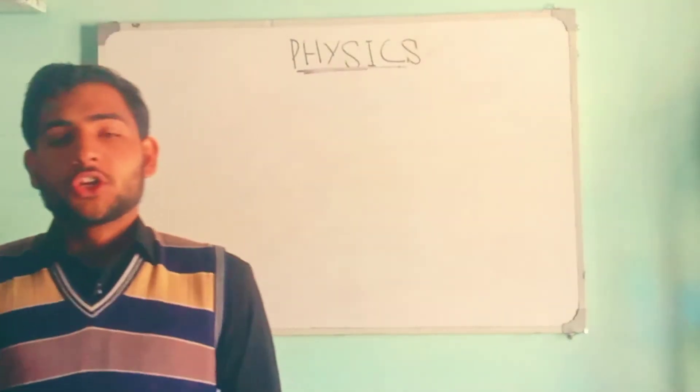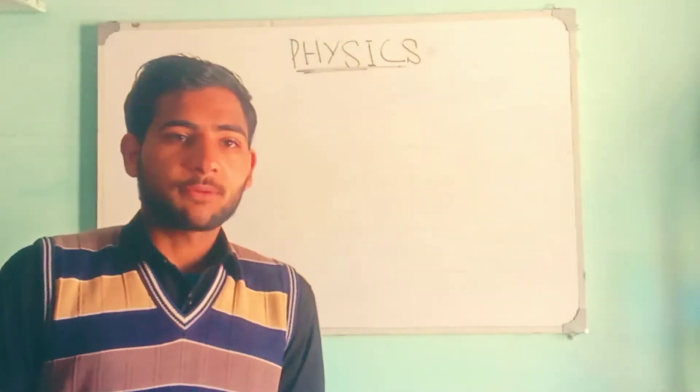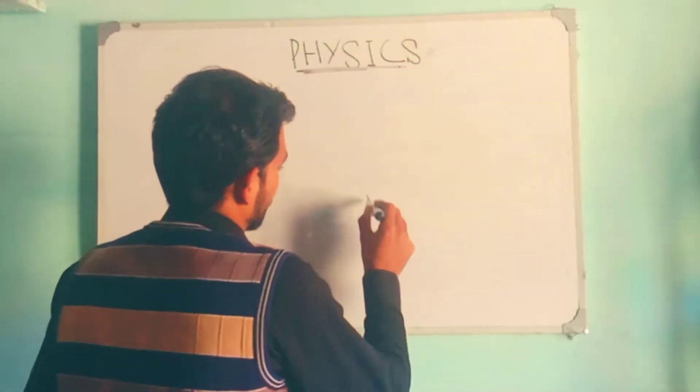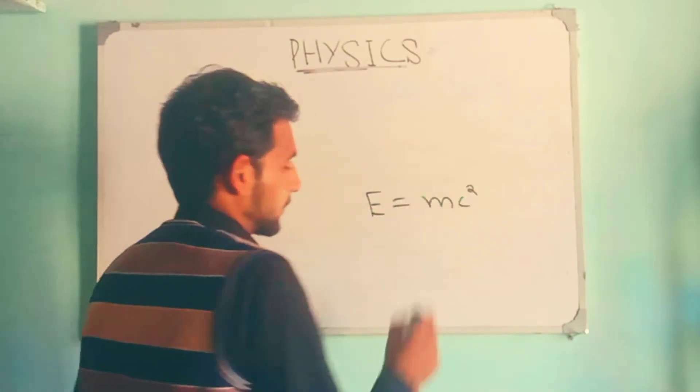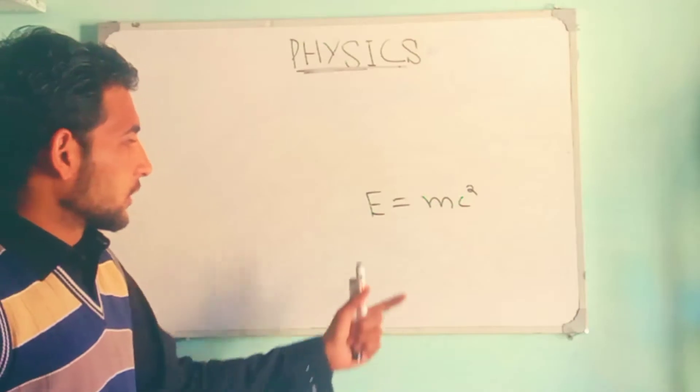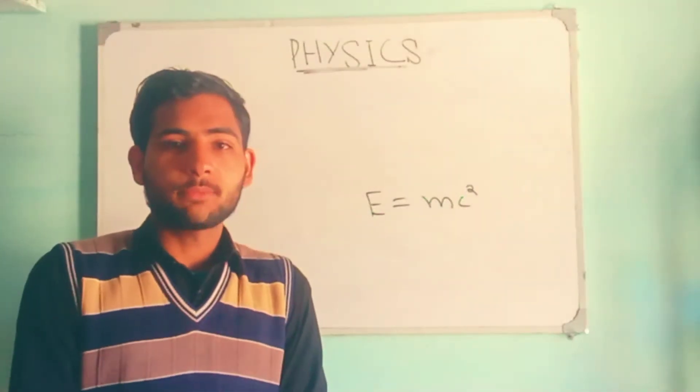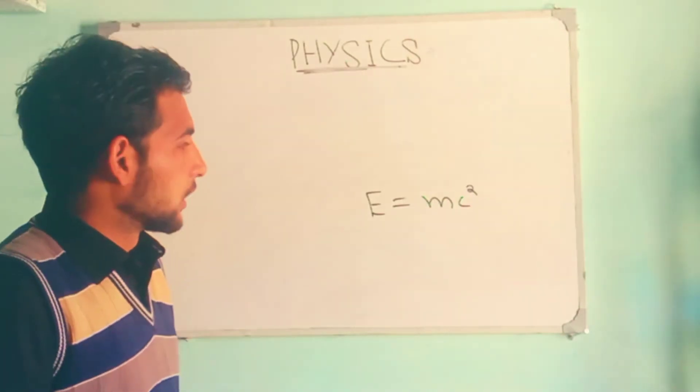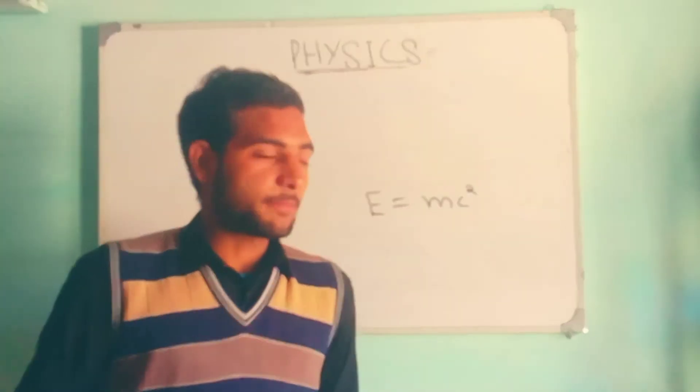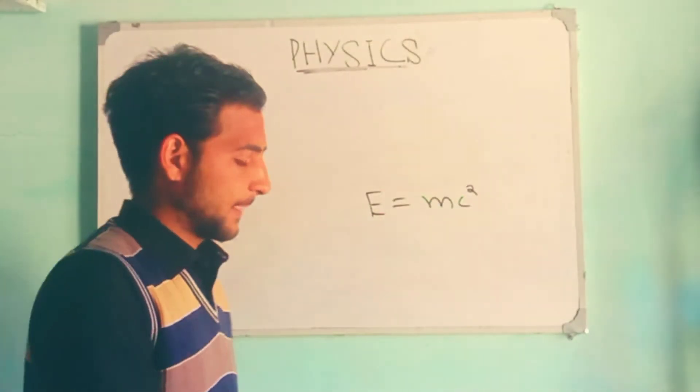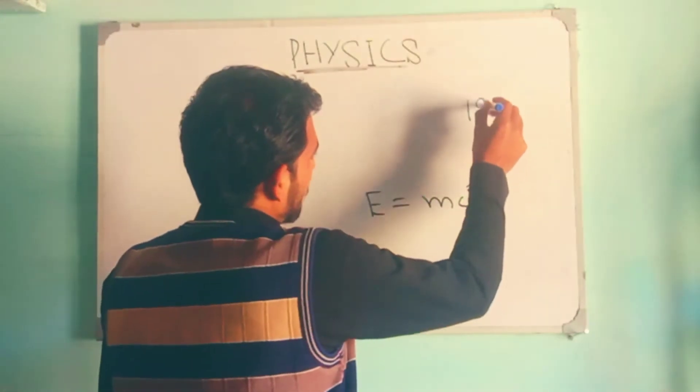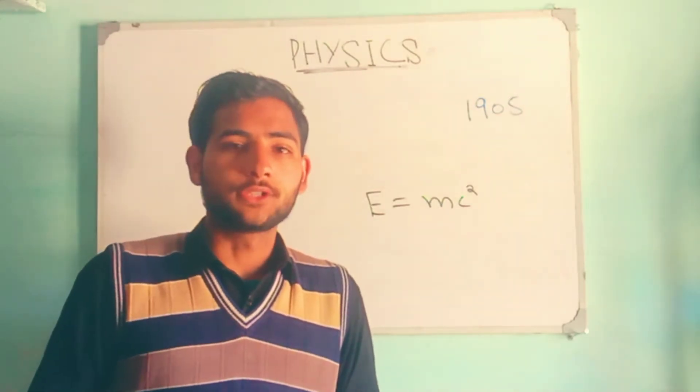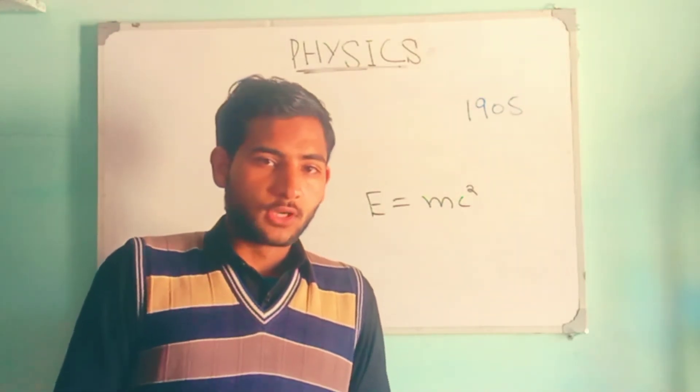Welcome everyone. Today we are going to discuss a brief introduction of Einstein's famous equation E=mc². This equation was given by Einstein in his paper which was published in 1905.